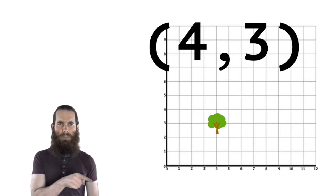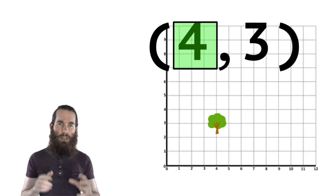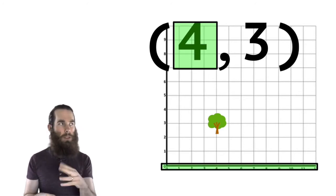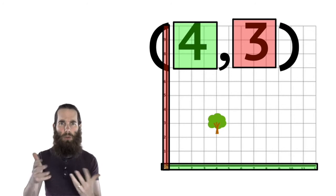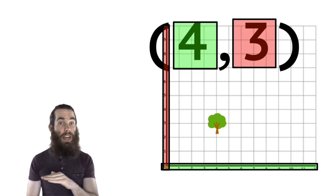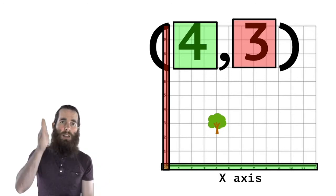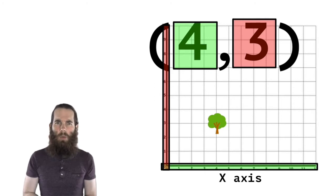So up and down and left and right. The first one is always going to be the left and right one, the second one's always going to be the up and down one. Or the first one's always going to be the x-axis and the second one's going to be the y-axis.